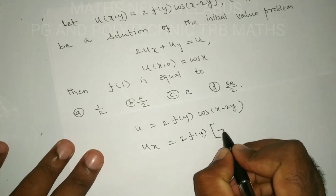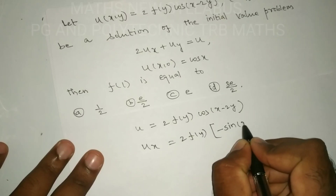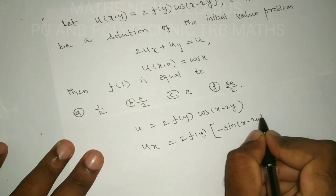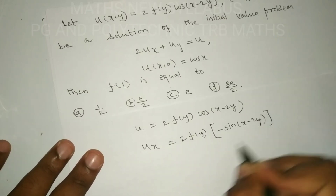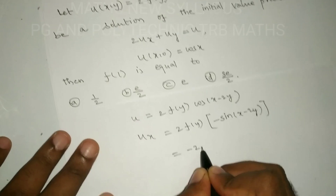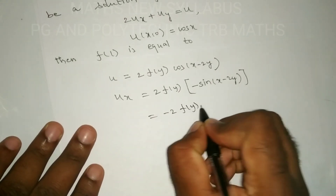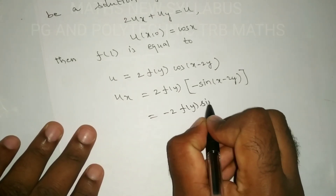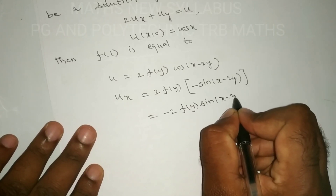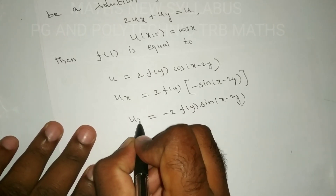Now differentiating u with respect to x: the derivative of cos(x − 2y) with respect to x is minus sin(x − 2y). So u_x equals minus 2 times f(y) into sin(x − 2y). This is u_x.